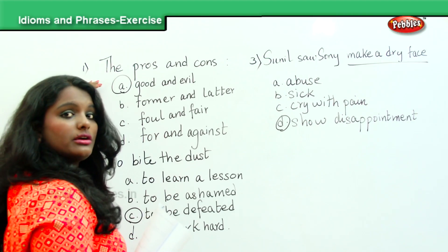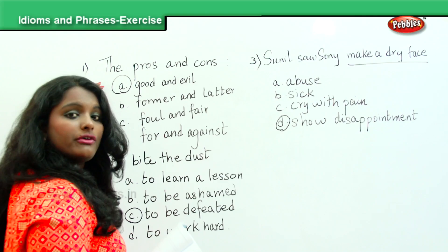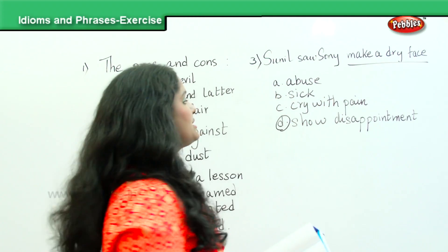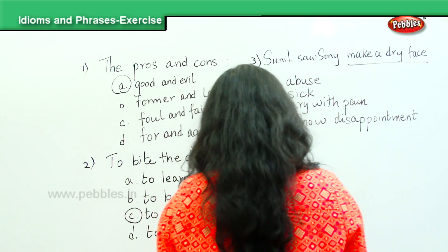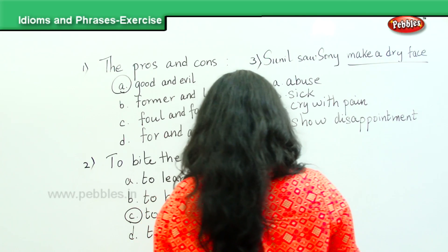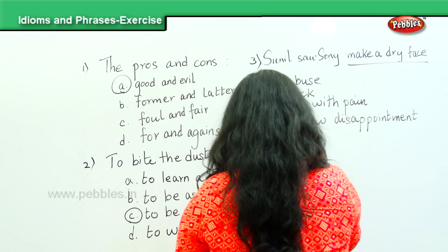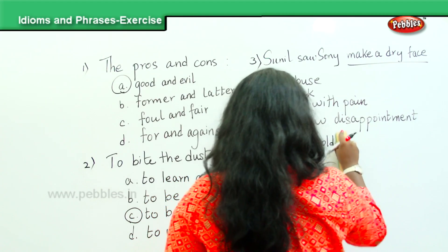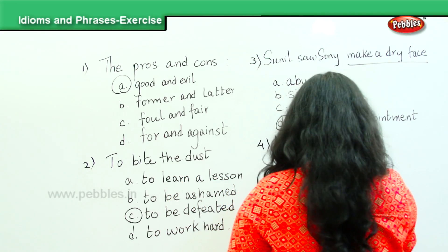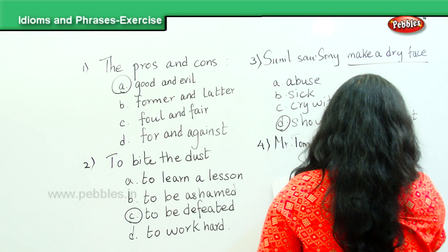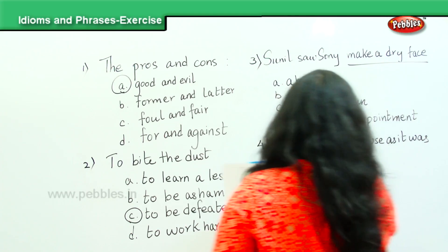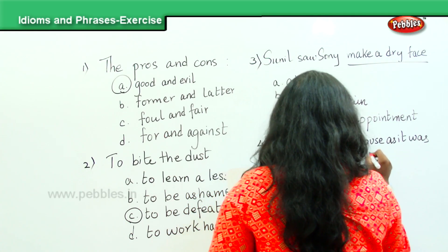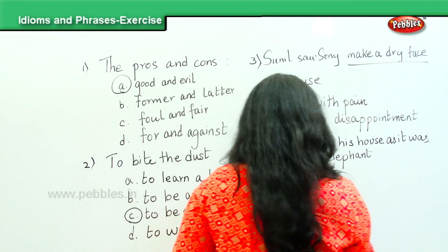You should be prepared as your questions can be directly in the form of idioms with options given, or sentences with the idioms in them and the options given. Here is one more example: 'Mr. Tom sold his house as it was a white elephant.' The idiom used here is 'white elephant.'